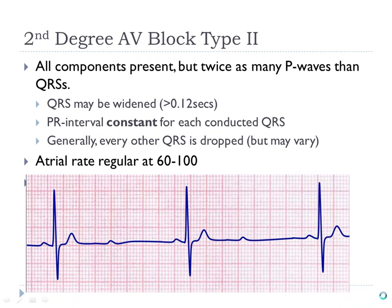Second degree type 2 block: generally you'll have twice as many P waves as QRS complexes, meaning usually every other beat is being dropped. So if your atrial rate is 60 — which is normal — your ventricular rate would be 30, which is quite abnormal. The ventricular rate is what counts.